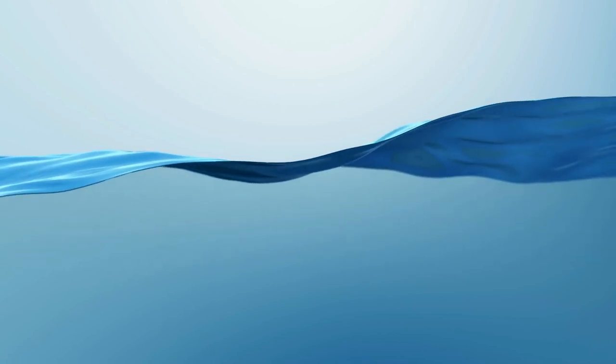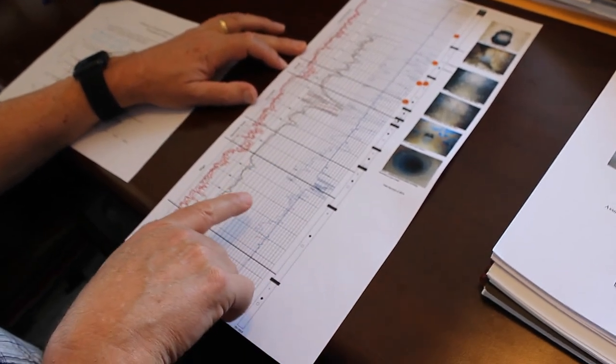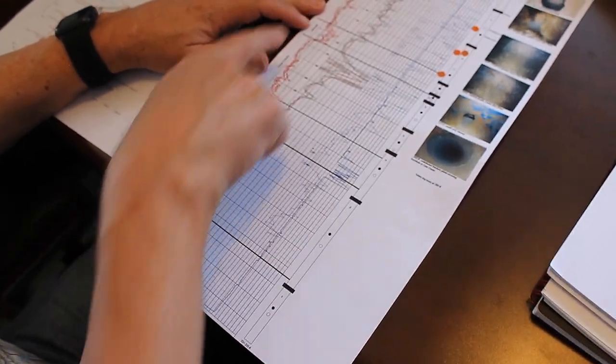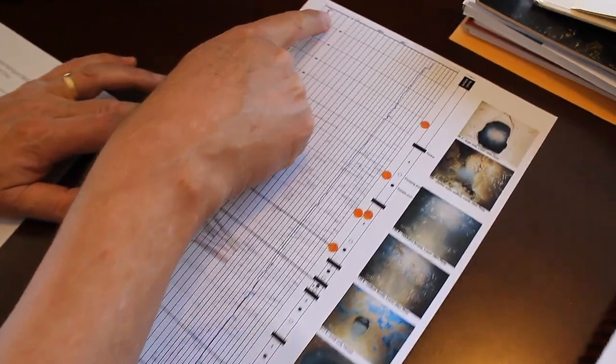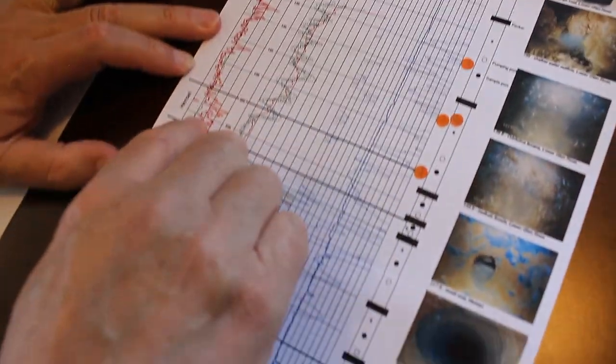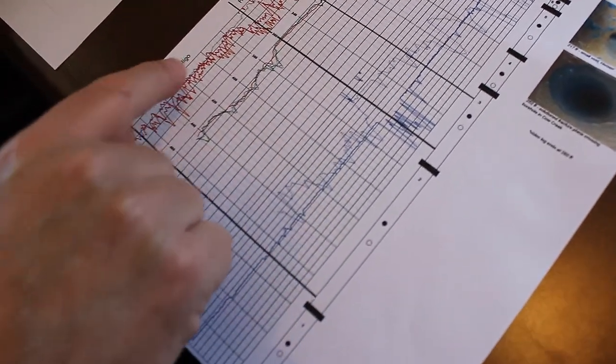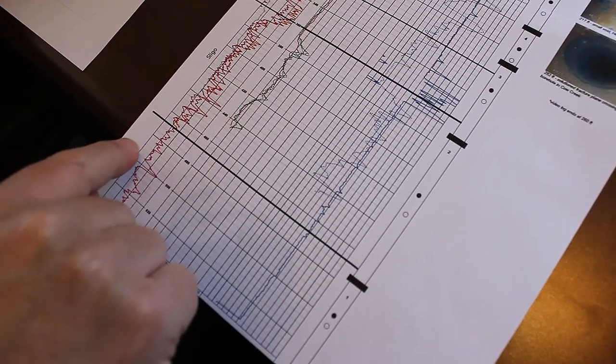Here's a look at the information gathered from slug testing. So this is a well log of the multi-port well that we installed near Jacob's Well. This shows from the surface we're in the lower Glen Rose limestone and we drilled down through the Hensel, Cow Creek, Hammett Shale, and into the Lower Trinity, which is the Sligo and Hauston formations.